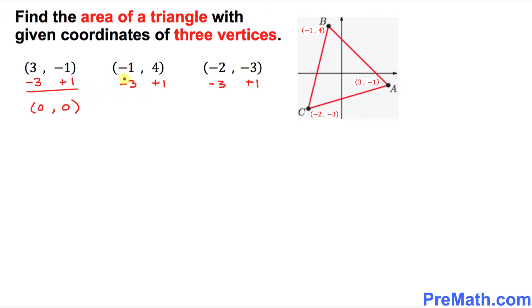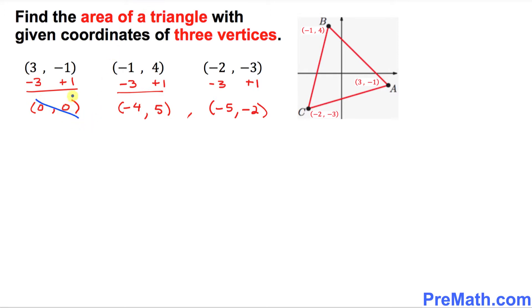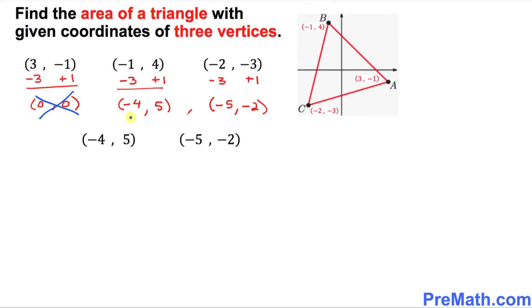So far so good. Let's simplify: that gives us negative four and positive five for one vertex, and negative five and negative two for the other. Now one of the vertices has become zero zero, and we are going to disregard and throw away that zero zero, leaving us with just these two coordinate pairs.